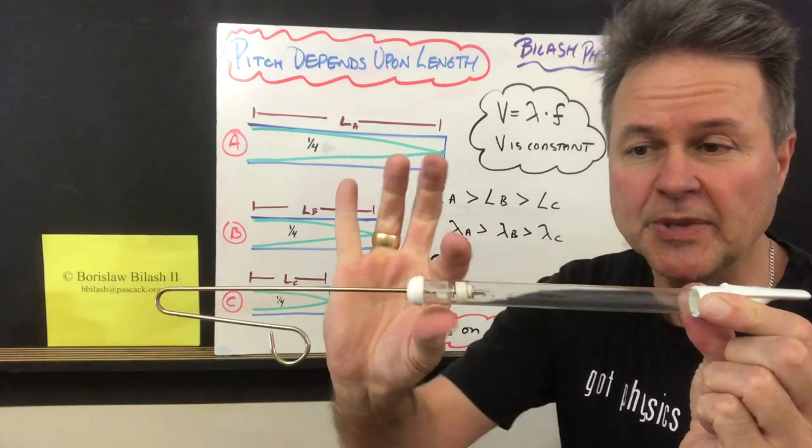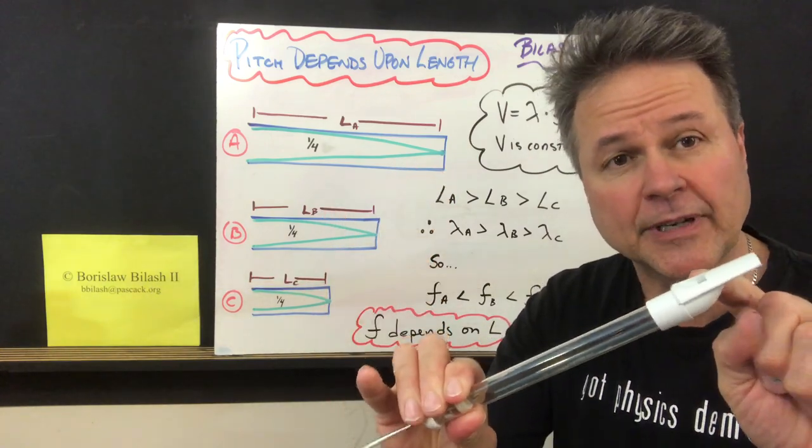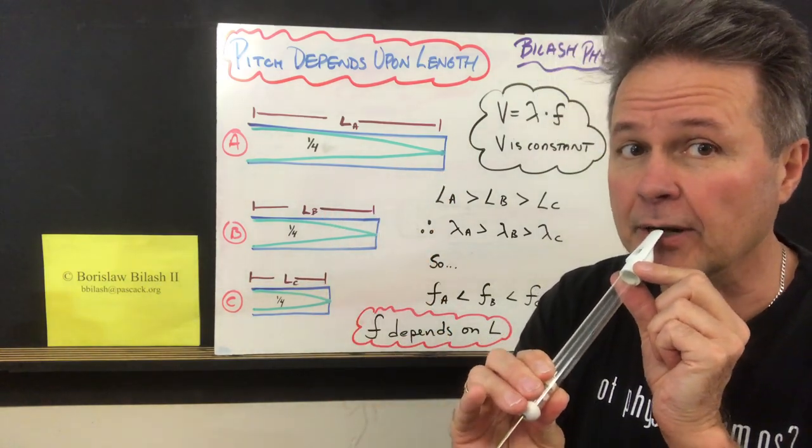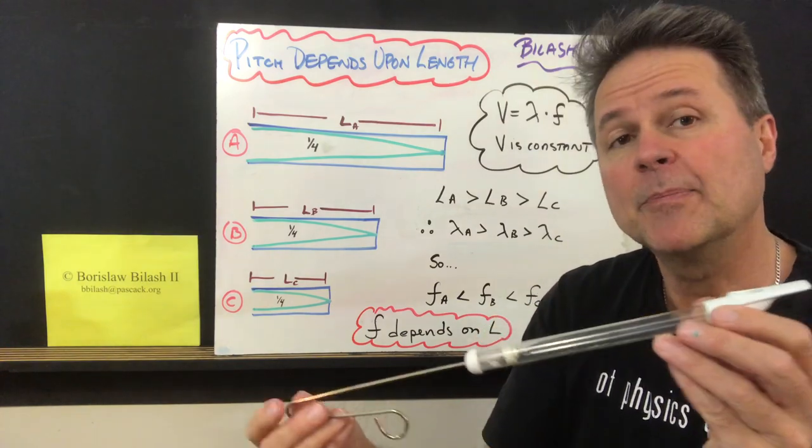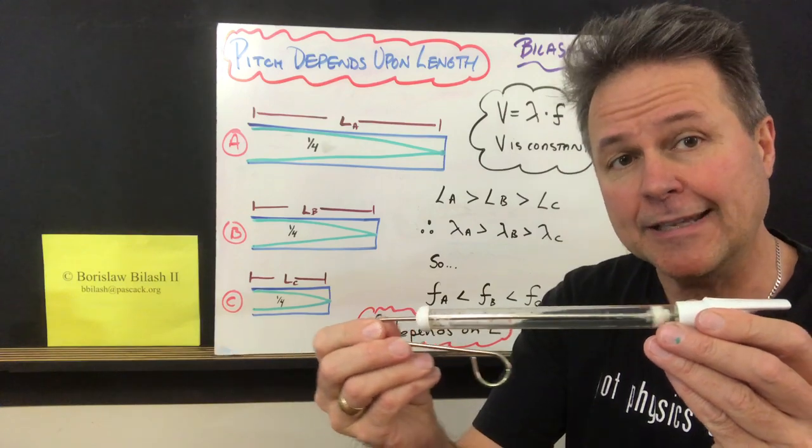This is actually a closed-end tube. This is the closed end and the open tube is where the exciter is. As I blow into the exciter, that creates a noise, but the pitch that you hear depends on the length of the tube.